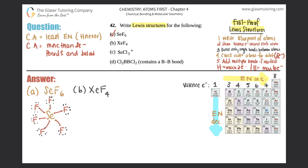Part B: XeF₄. It's between xenon and fluorine. Xenon would be in the middle because it's the least electronegative, surrounded by four fluorines: one, two, three, four. Draw valence electrons around each atom - xenon actually has eight valence electrons and fluorine has seven. So put one, two, three, four, five, six, seven, eight around xenon and then seven around each fluorine.